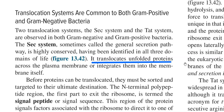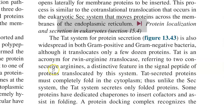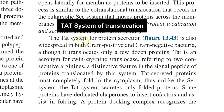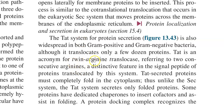The Sec system mainly involves translocation of unfolded protein across the plasma membrane, or it integrates them into the membrane itself. The TAT system, as already discussed, refers to the twin arginine translocation system. It is widespread across both gram-positive and gram-negative organisms and is involved in translocation of a few dozens of proteins.